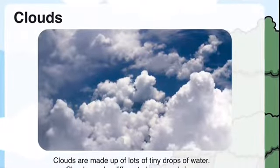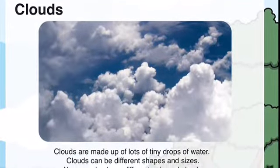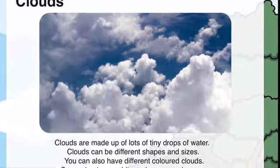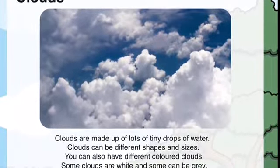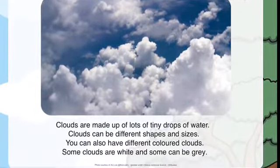Clouds are made of tiny drops of water. Clouds come in different shapes and sizes. You can also have different colored clouds — some can be white and some can be grey.